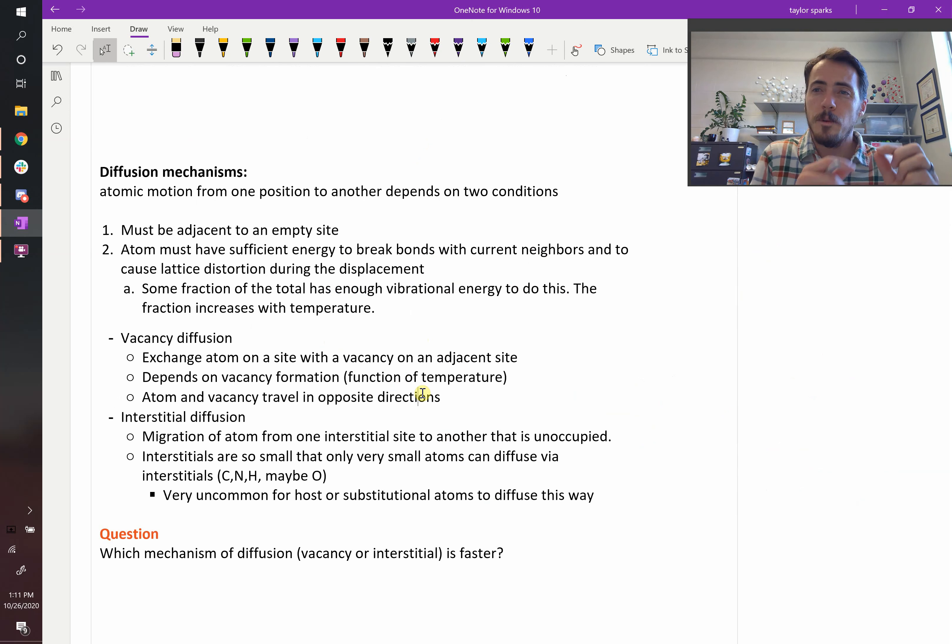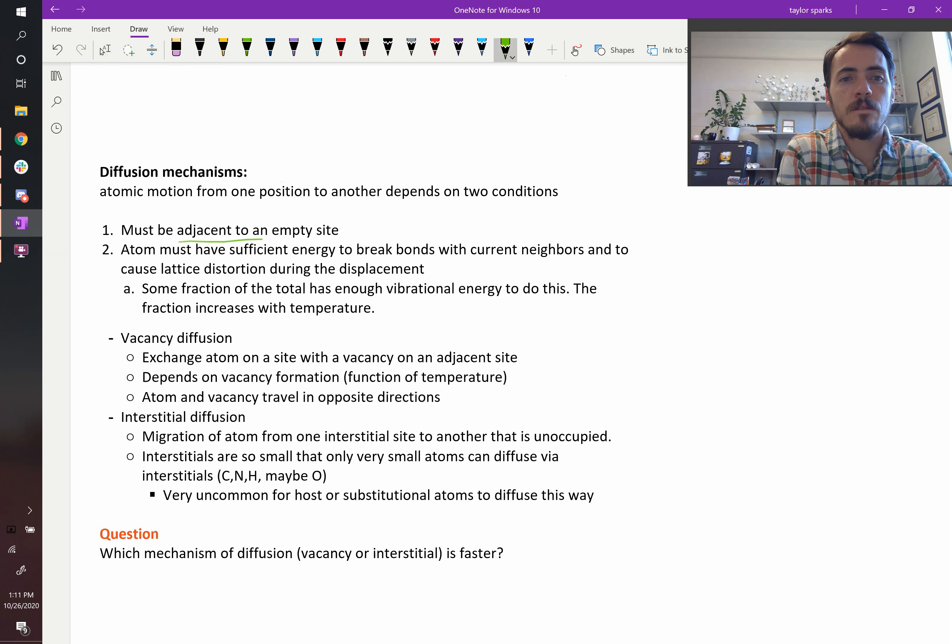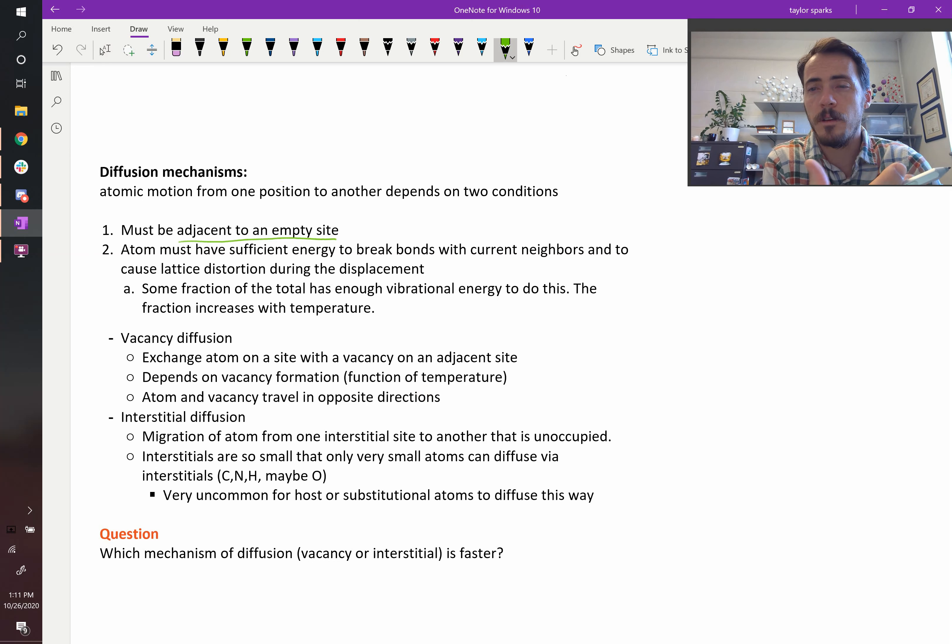From an atomic perspective, it's all about atoms moving from a filled spot to an empty spot. This can be different things - an actual lattice position where a vacancy is present, or an empty interstitial site. Diffusion mechanisms rely on two key things happening. First, you must be adjacent to an empty site, whether that's a lattice site or an interstitial. And second, you have to have sufficient energy to both break your bonds and to distort the lattice slightly during the diffusion process. Only some fraction of your total is going to have enough vibrational energy to do this, but this fraction increases with temperature.